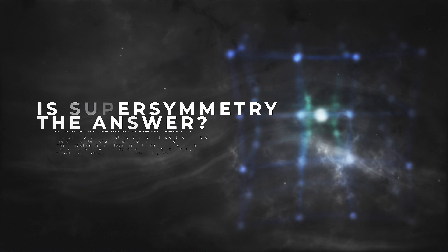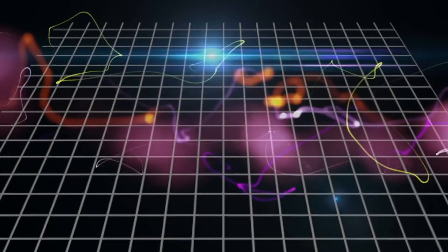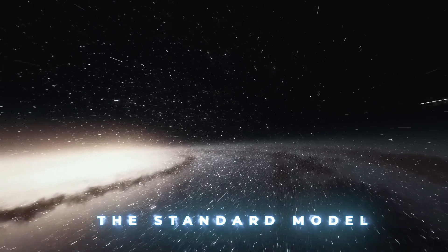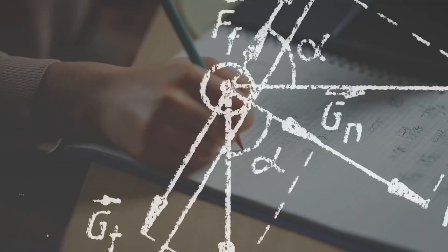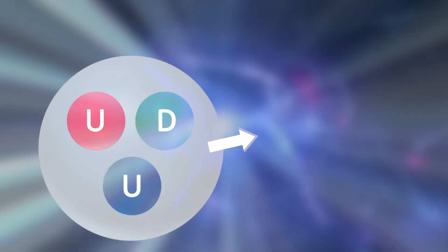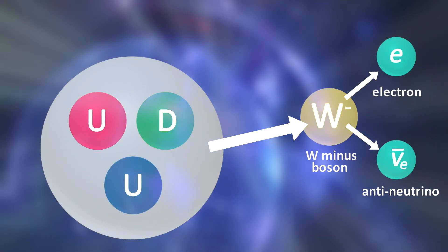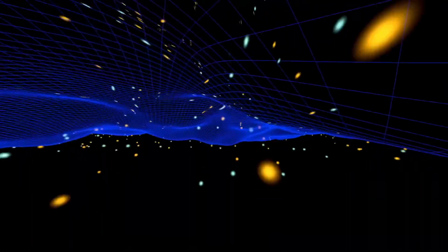Is supersymmetry the answer? In the world of particle physics, the standard model is the best guess as to how the universe is put together and how it functions on a fundamental level. And even though it's one of the best tested and most verified theories out there, it's still very much incomplete with several glaring gaps.